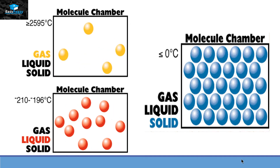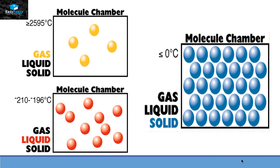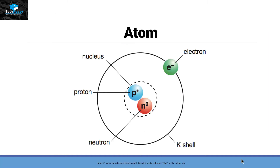The particles that make up these elements are called Atoms. Atoms have three different parts. One is the electron that is revolving around the nucleus — electrons have negative charge. Inside the nucleus we have two more particles: one is the proton that has positive charge, and one is the neutron that doesn't have any charge.